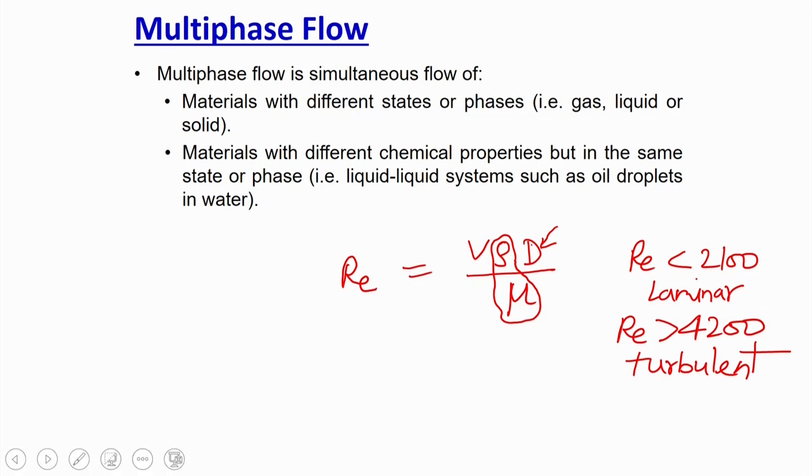Before going to the measurement part, I would like to first discuss what I need to measure, and before that, introduce what multiphase flow is. There is some confusion — people generally believe that multiphase means different states. Actually, multiphase flow means the flow of two or more different states flowing together, like gas, liquid, or solid. But it can also be defined as two species that are the same state but have different chemical properties — they will still be considered multiphase flow.